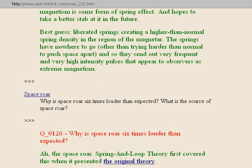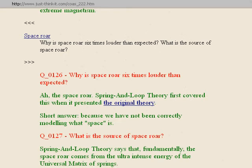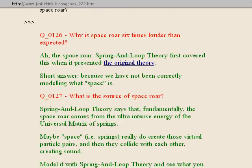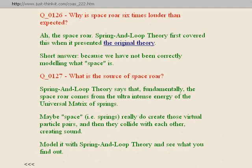Next section: origin of magnetar magnetic field. Question one hundred and twenty-five: what is the origin of magnetar magnetic field? Good question. Spring-in-Loop Theory would say such extreme magnetism is some form of spring effect. The best guess: liberated springs creating a higher-than-normal spring density in the region of the magnetar. The springs have nowhere to go other than trying harder than normal to push space apart, sending out very frequent, very high-intensity pulses that appear to observers as extreme magnetism. Next section: space roar. Question one hundred and twenty-six: why is space roar six times louder than expected? Spring-in-Loop Theory first covered this when it presented the original theory. The short answer: because we have not been correctly modeling what space is. Question one hundred and twenty-seven: what is the source of space roar? Spring-in-Loop Theory says fundamentally the space roar comes from the ultra-intense energy of the universal matrix of springs. Maybe space — i.e. springs — really do create those virtual particle pairs, and then they collide with each other, creating sounds.